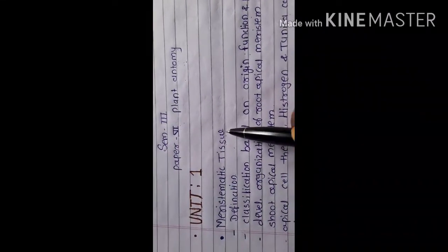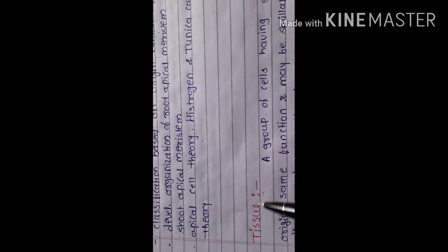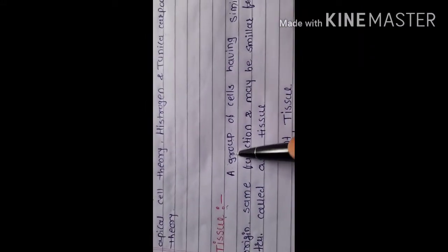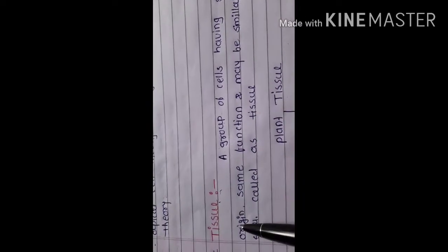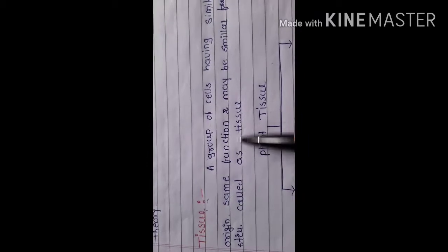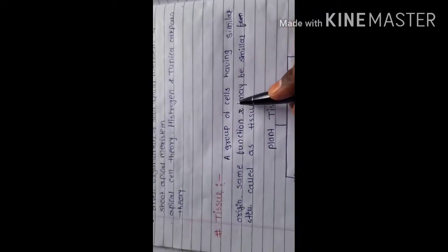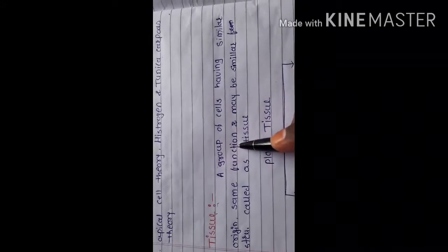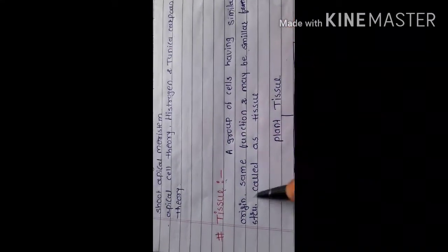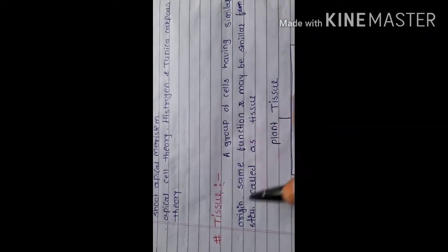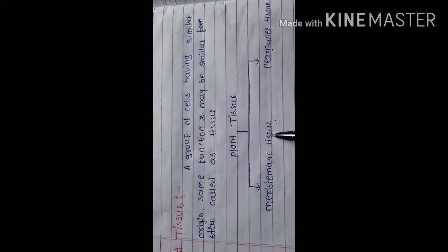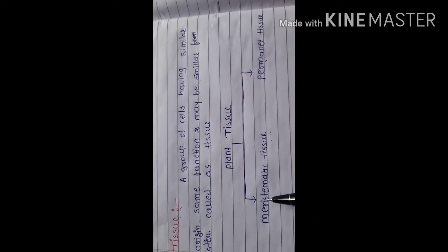Before we start Unit 1, we should know what is meant by tissue. Tissue can be defined as a group of cells having similar origin, same function, and may be similar structure. Such a group of cells is called tissue. Plant tissue can be differentiated into two types: meristematic tissue and permanent tissue.